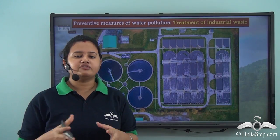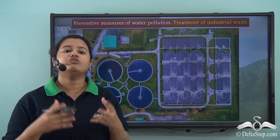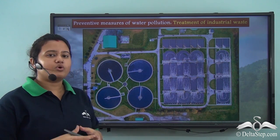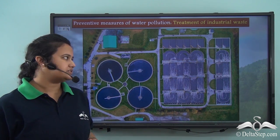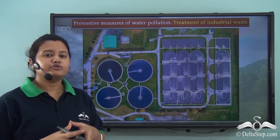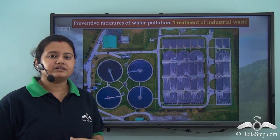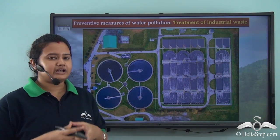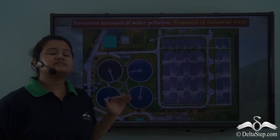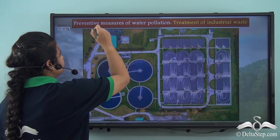Apart from household and agricultural waste, discharges from industries are also a major source of water pollution. Industrial wastewater treatment plants treat the wastewater of industries before it is released into water bodies. These treatment plants remove the toxic chemicals present in industrial wastewater, and the treated water is then safely released into rivers and other water bodies, thereby helping to control water pollution.